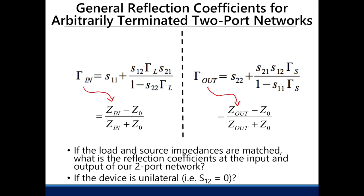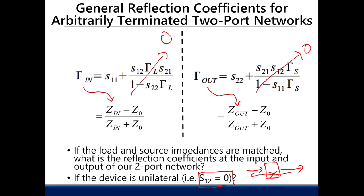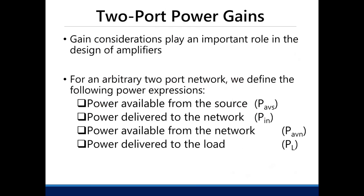If the device is unilateral, that means it will only amplify signal in one way and not the other. So S12 equals zero for a unilateral device. For this case, your reflection coefficient will not be dependent on the load and source impedances — it will only be dependent on the properties of your transistor.